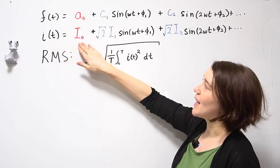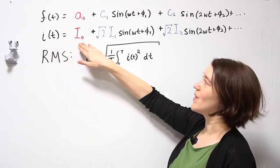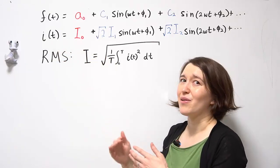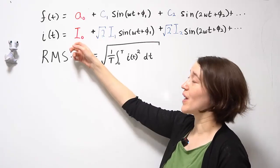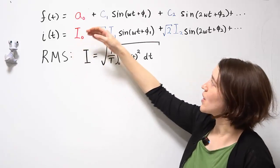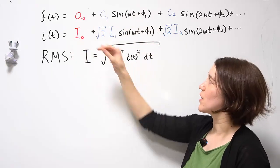And we have a DC term. This is the same as the RMS value of the DC of the waveform. So we call that I0. And we're going to rewrite each of these coefficients a little bit differently.